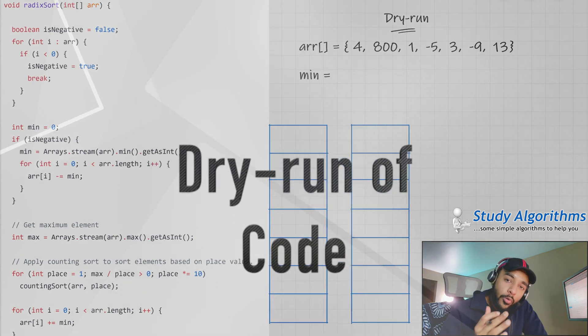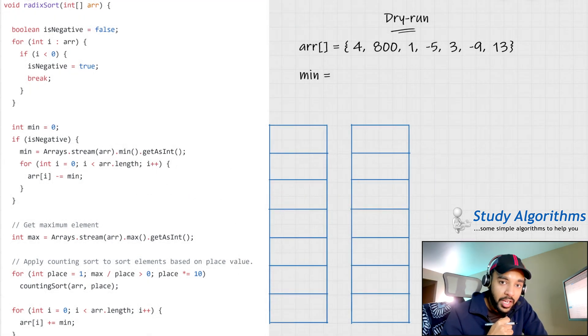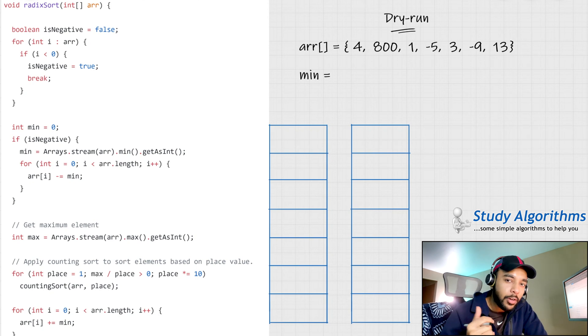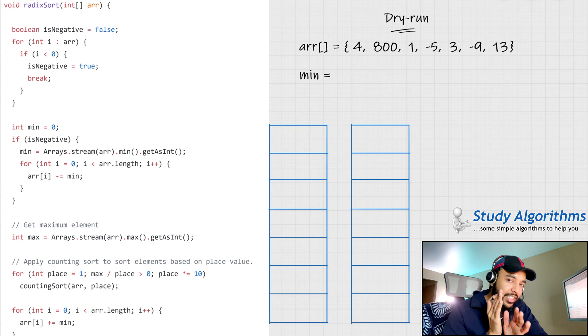You might wonder how would you perform Radix sort if you have some negative numbers in the array. So let us take up an example of an array that has some negative numbers. On the left side of your screen, you have the actual code to implement Radix sort. Now, here is a trick that we apply.